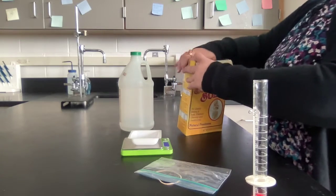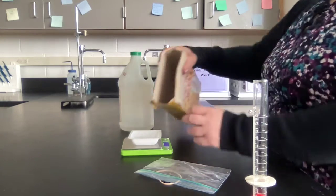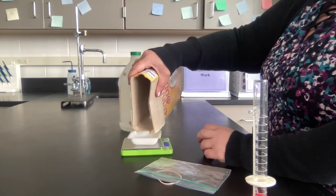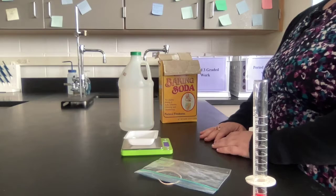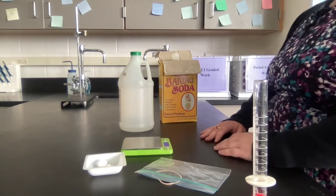You're then going to get some baking soda, and you can use a scoopula to get this out so you can be more precise. And you're going to put that off to the side.